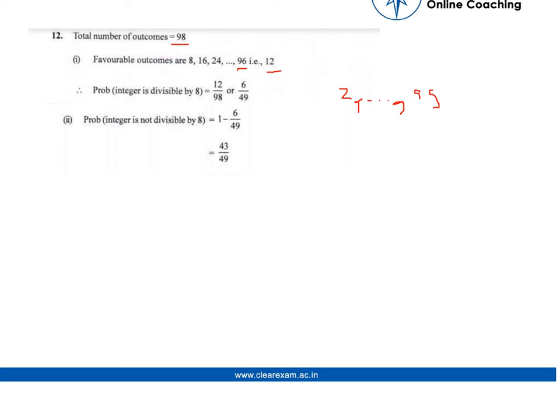Now to find the probability that an integer is not divisible by 8, we calculate it as 1 minus probability that integer is divisible by 8, that is 1 minus 6 upon 49, which is equal to 43 upon 49.